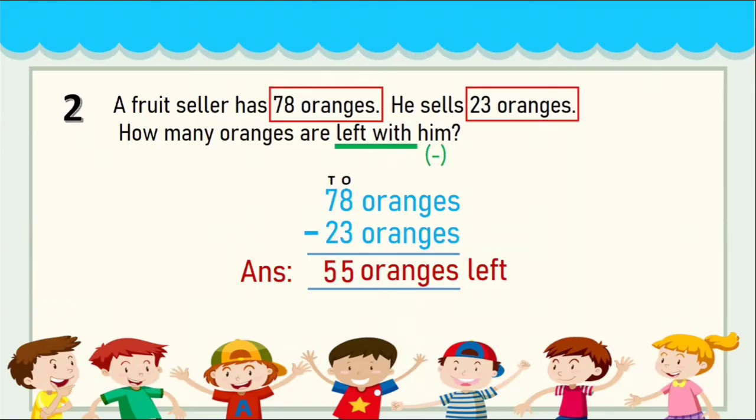In this question the word 'sells' has come, which means some amount has been reduced. Whenever something gets reduced, you can understand it is a problem sum of subtraction. These are the key words you need to keep in mind — they show that the quantity is being reduced.